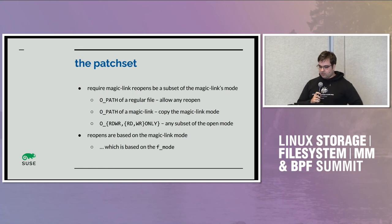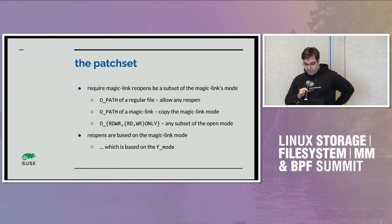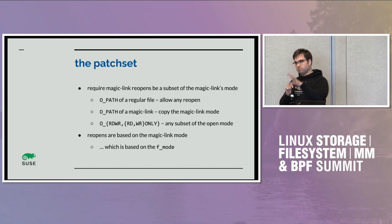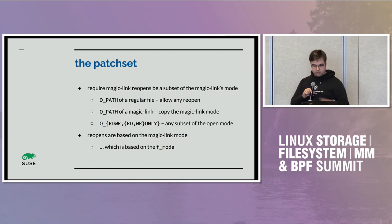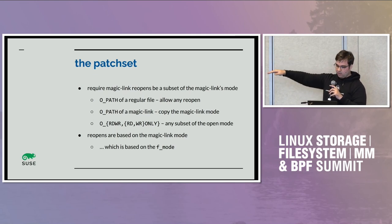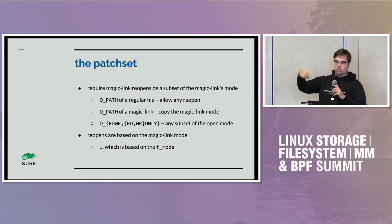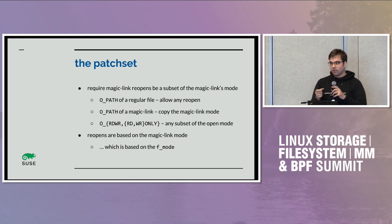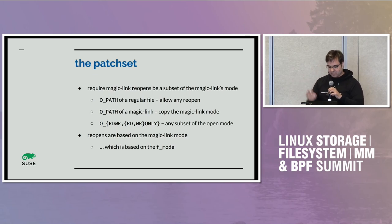What does it mean to say you need to be a subset? For an opath of a regular file, you can reopen it any way you like unless you have a mask set — that's the way it works now. For an opath of a magic link, you copy the mode of the magic link. Magic links, unlike regular symlinks, have magic modes — if you have a file open for reading only, the mode has only the read bit set, not the write bit.